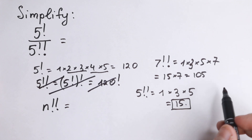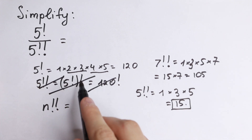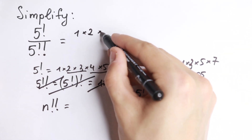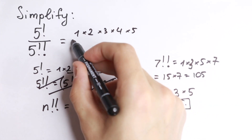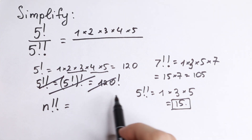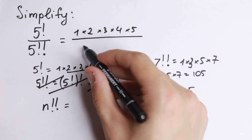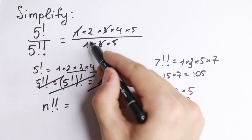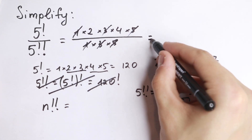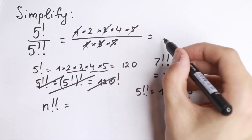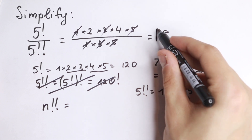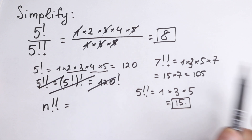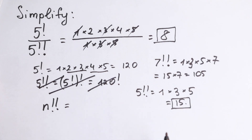Now let's find the final answer. We write it as a product: 5 factorial is 1 times 2 times 3 times 4 times 5 in the numerator, and the denominator is 1 times 3 times 5. The 1s, 3s, and 5s cancel, leaving us with 2 times 4, which equals 8. As you can see, it's not 120 over 120 factorial — we get a really clean answer of 8.